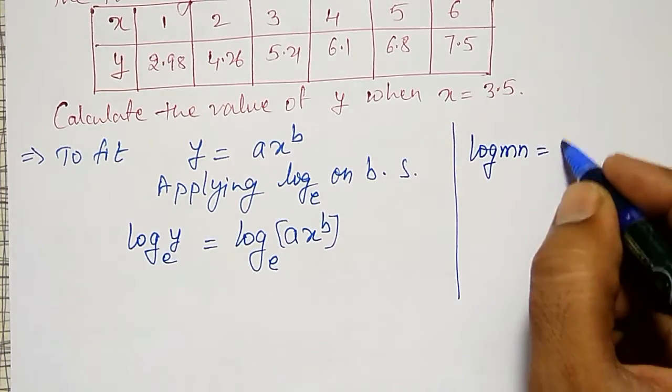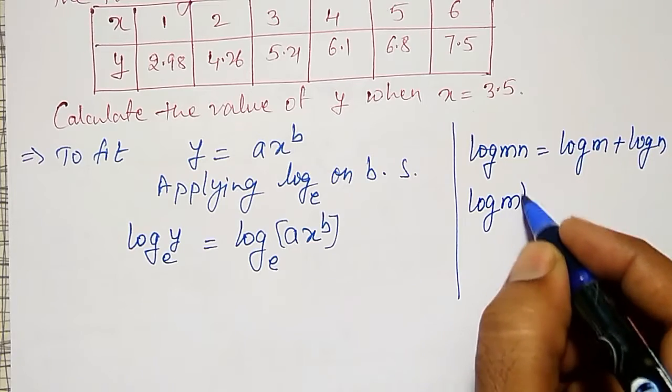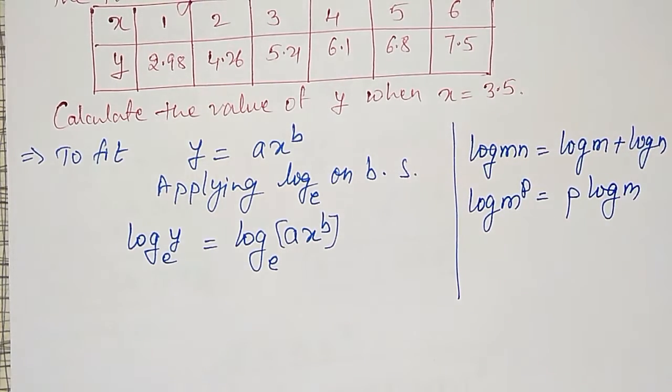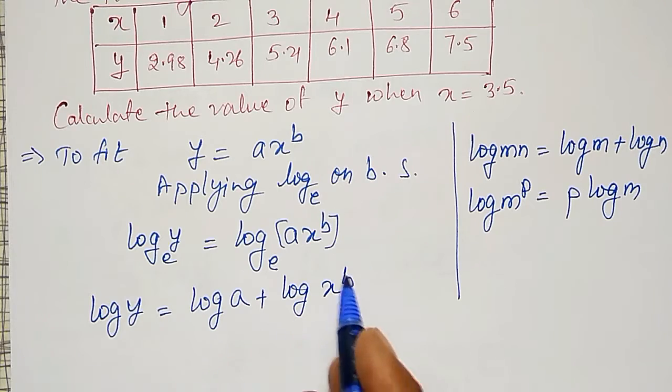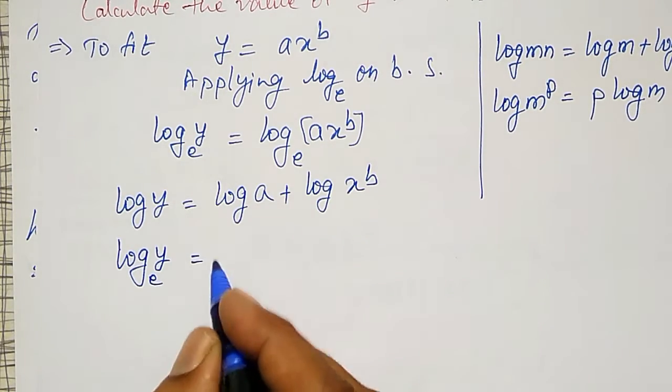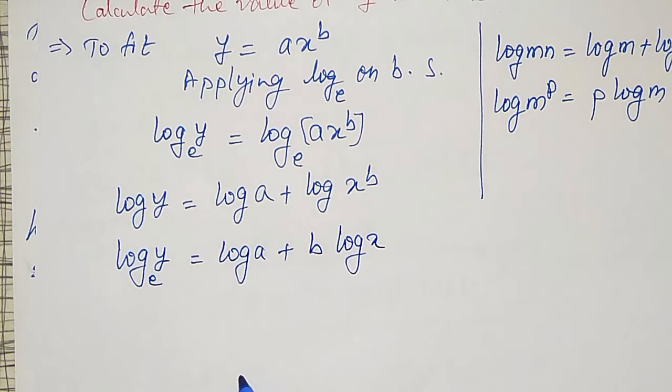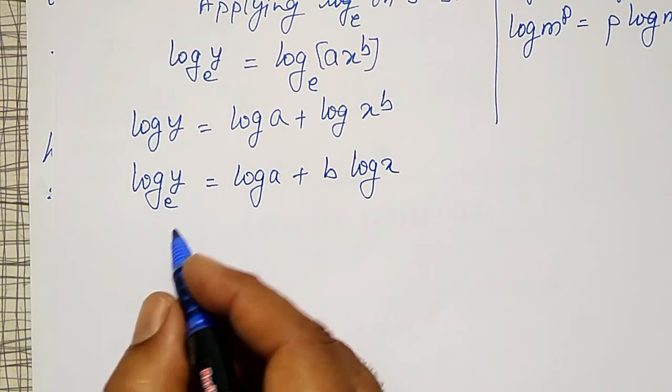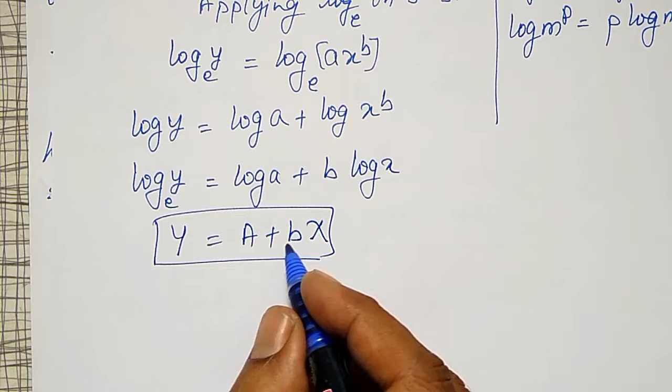Using the property of log, log of m into n equals log m plus log n, and log of m to the power p equals p into log m. So log y equals log a plus log x to the power b. This becomes log y to the base e equals log a plus b into log x. I can write this as capital Y equal to capital A plus small b into capital X.